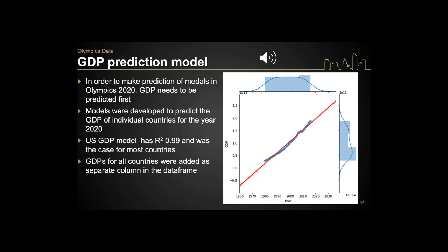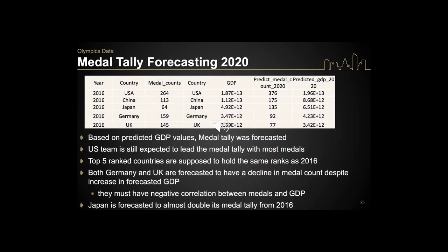The next step was to use the predicted GDP for 2020 to estimate the number of medals for countries that participated in the past. This table lists the top ranked countries for 2016, their medal counts, and the predicted medal count based on the predicted GDP. These GDP numbers are in USD trillions. The U.S. team is still expected to lead the medal tally in 2020 with first rank. Germany and UK are forecasted to see a decline in medal count despite an increase in forecasted GDP, which could be due to negative correlation between medals and GDP. Japan is forecasted to have double the number of medals compared to 2016.